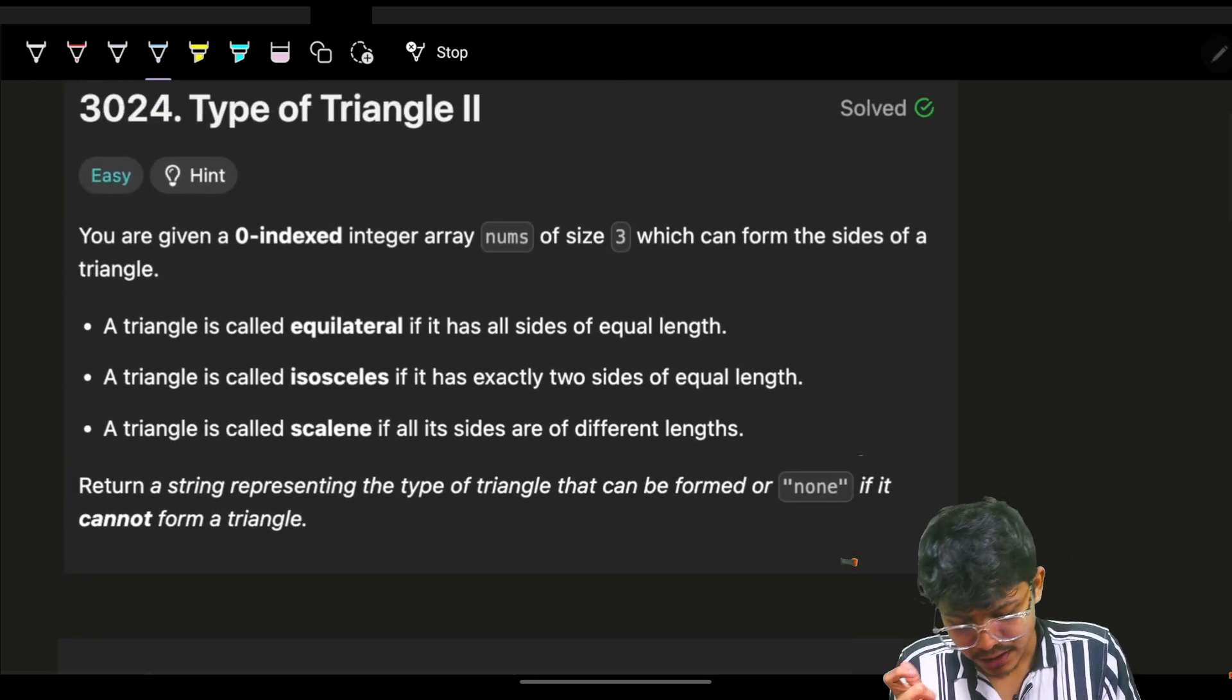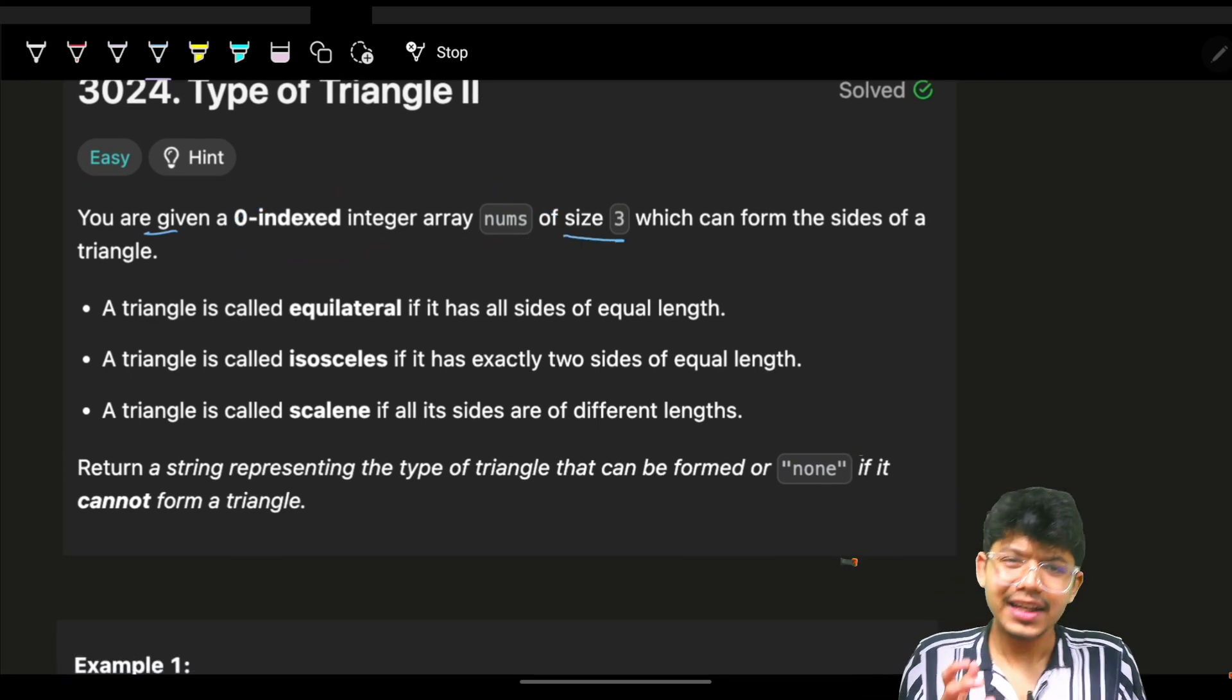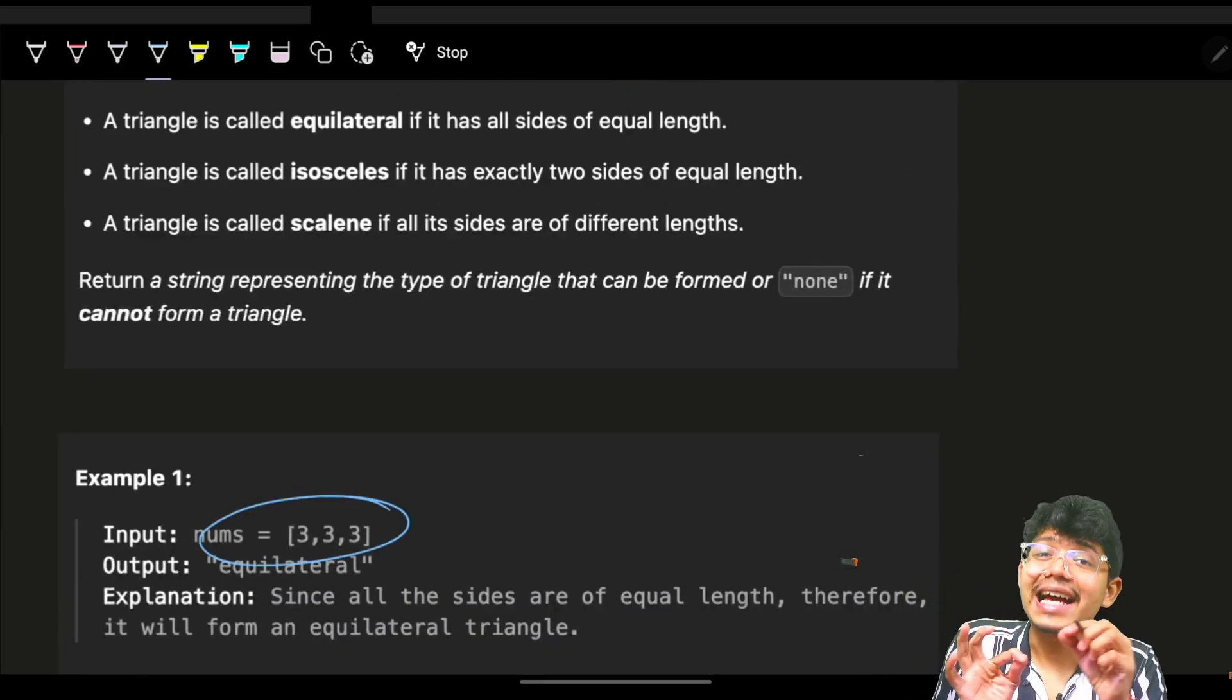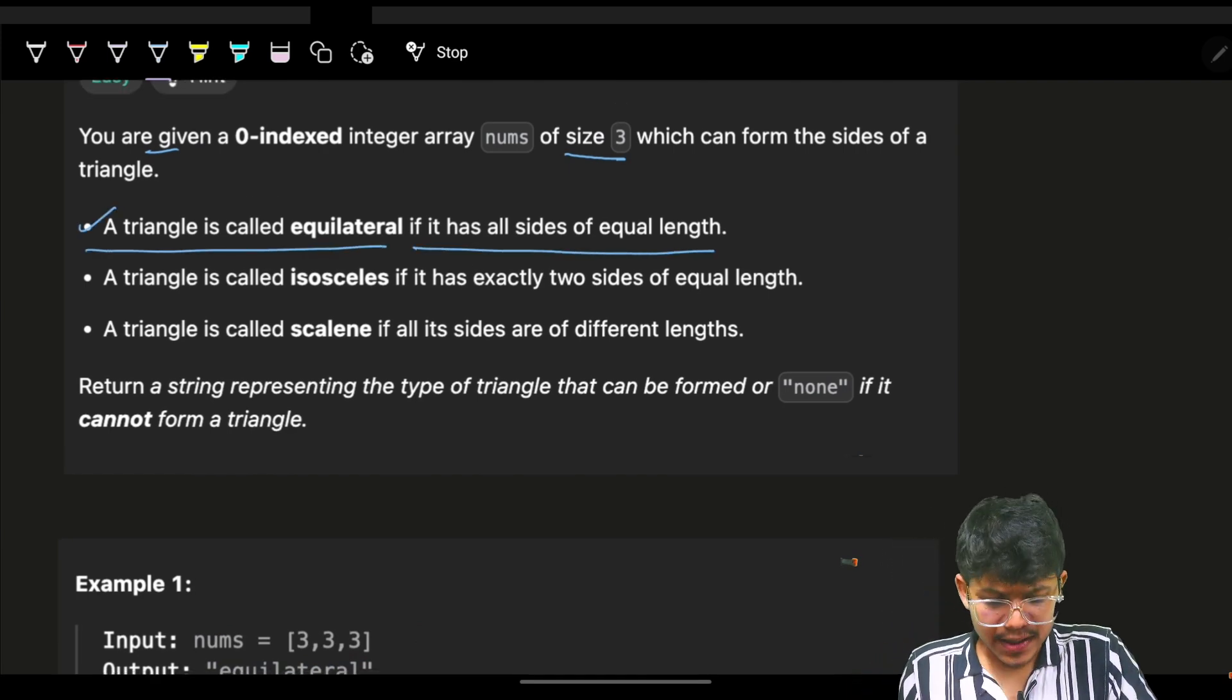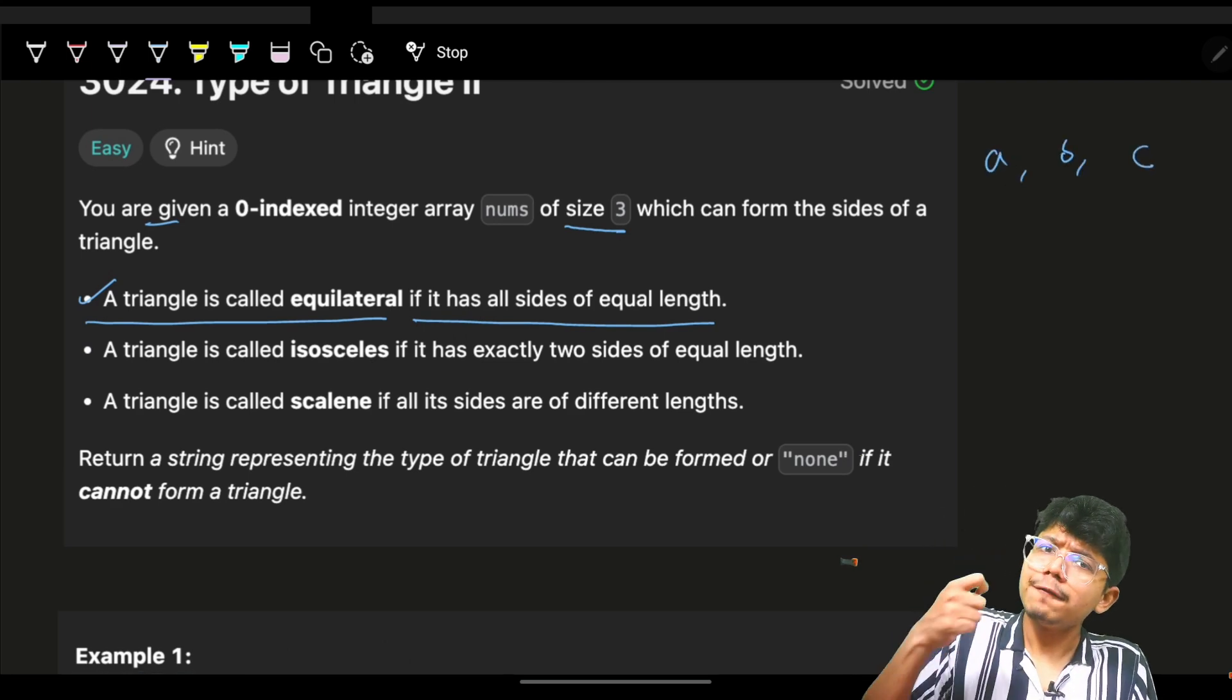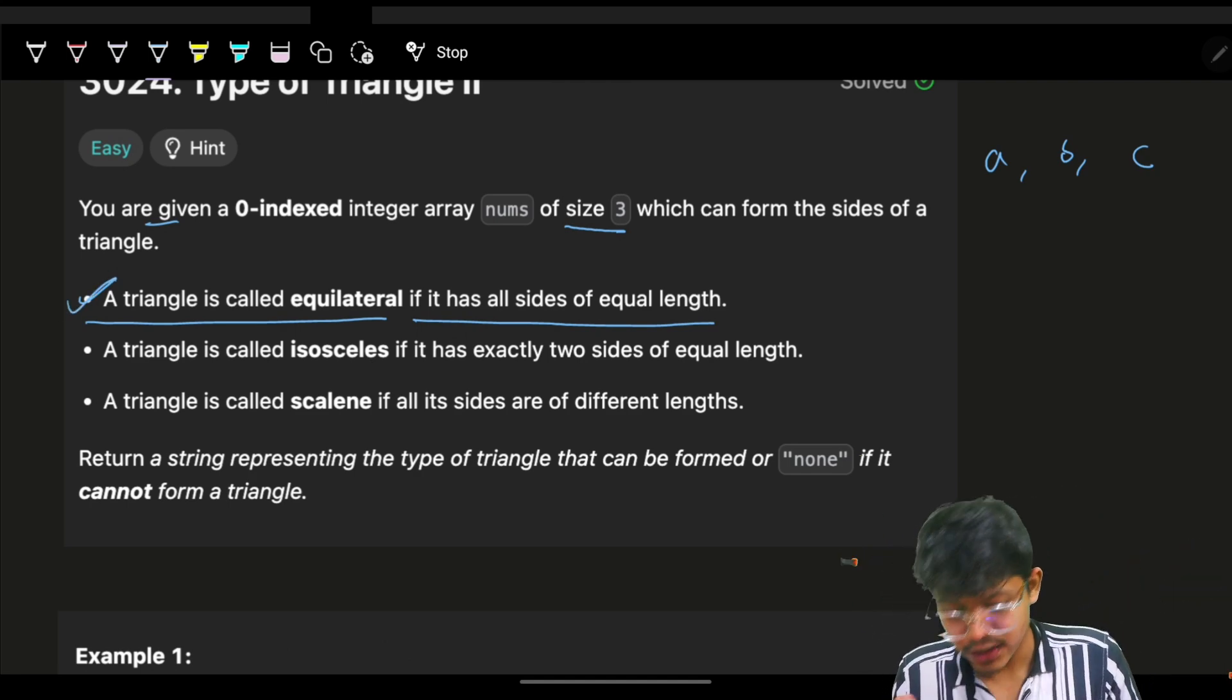It says that you are given a 0-indexed array called nums of size 3. Now it just says I have the array nums representing my three side lengths of a triangle. Now a triangle is called equilateral if all sides are equal, which means let's represent the side of triangle as A, B, and C. If all sides, which means A, B, and C, all three are equal, I will say it is equilateral.